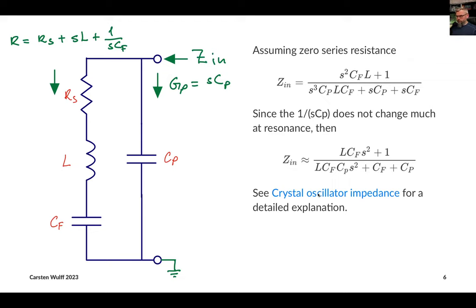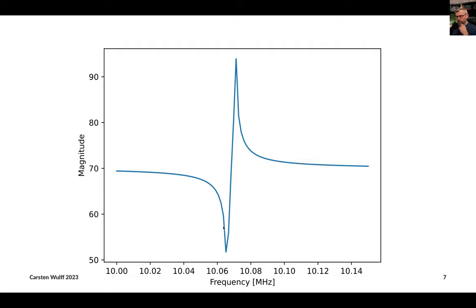Since this 1 over SCP doesn't really matter for the frequency that we're interested in, we can actually simplify it and see at resonance, the impedance is given by this function. I would encourage you to have a look in the crystal oscillator impedance for a detailed explanation. If you plot this impedance as a function of frequency, then you will see there are two resonance points. One is for the series resonance, the second is for the parallel resonance.